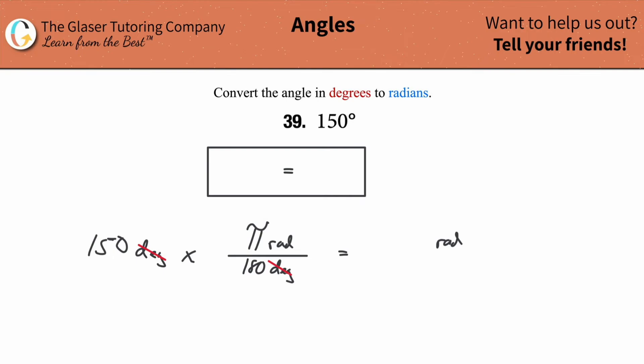Now, all we need to do here is do some simplifications. So we might notice that we can simplify the 150 and the 180. This will become 15, and this will become 18.